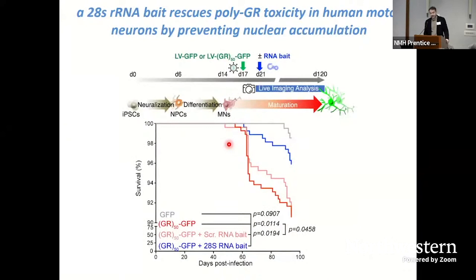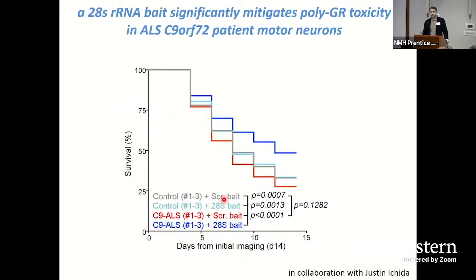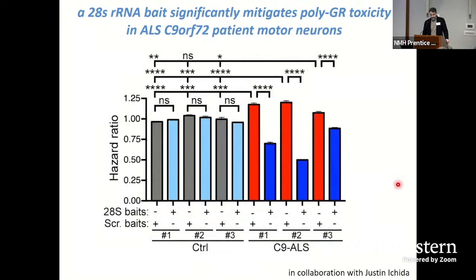The question is: can our 28S ribosomal RNA bait inhibit that toxicity? The answer is yes — significantly more effectively than the scrambled control. To test this in a more physiological model, we teamed up with Justin Ichida's group at USC and tested the ability of the 28S RNA bait to mitigate polyGR toxicity in motor neurons derived from three C9orf72 ALS patients as well as three healthy controls. We find that the 28S bait is able to significantly mitigate the toxicity associated with the C9orf72 mutation in patient motor neurons.